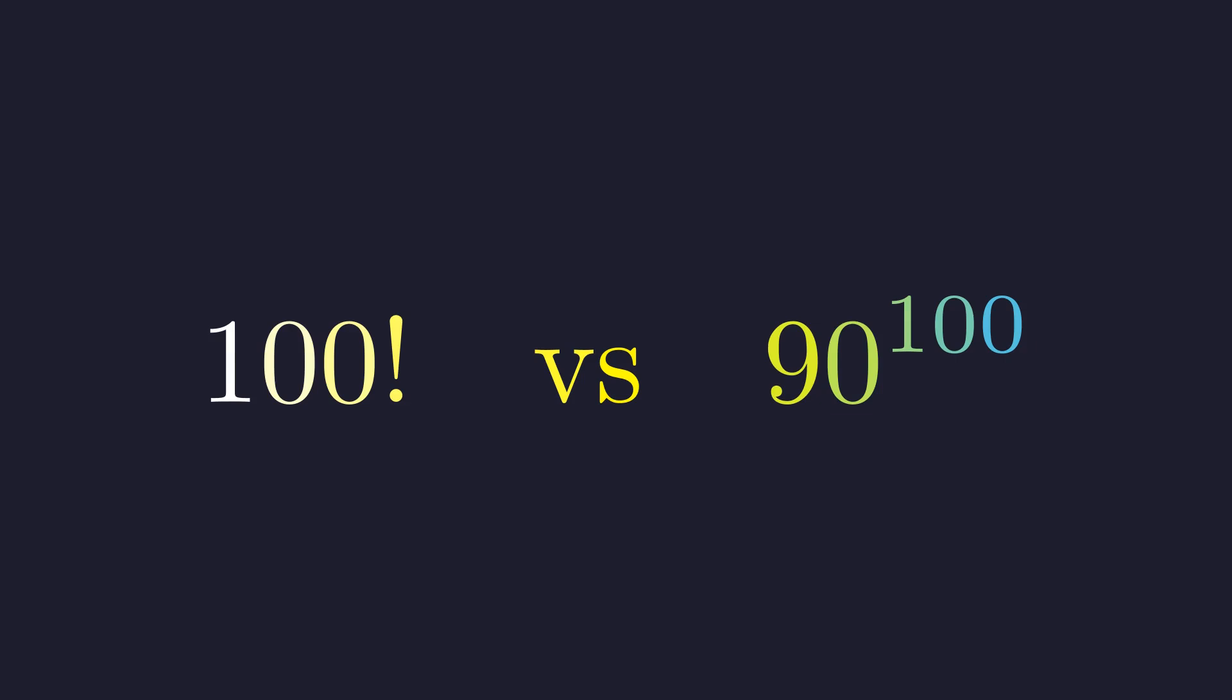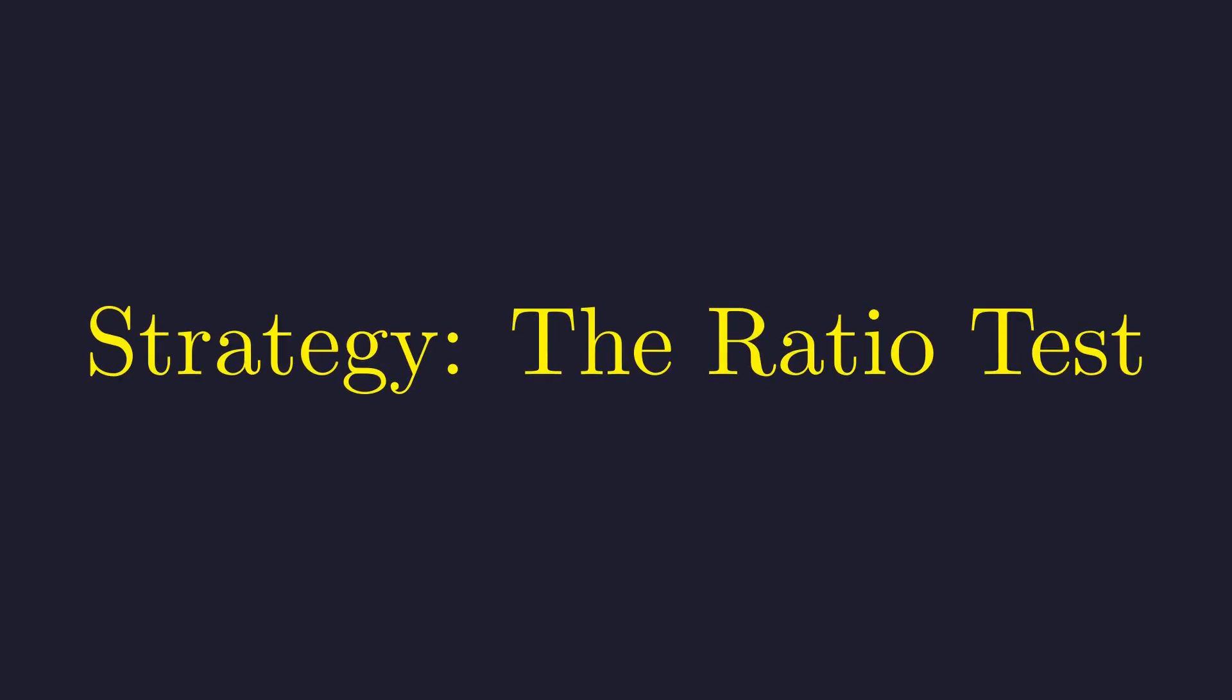Direct calculation is impossible, so we need a more elegant strategy. Our strategy will be to use the ratio test. We will construct a fraction with these two numbers and determine if its value is greater or less than 1.